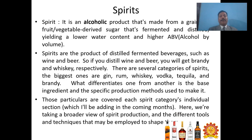Spirits: a spirit is an alcoholic product made from a grain, fruit or vegetable-derived sugar that is fermented and distilled, yielding a lower water content and higher alcohol by volume. Spirits are the product of distilled fermented beverages — if you distill wine and beer you get brandy and whiskey respectively. The main spirit categories are gin, rum, whiskey, vodka, tequila and brandy. What differentiates one from another is the base ingredient and specific production methods. With this, we come to the end of Unit 1: Alcoholic Beverages. Thank you.